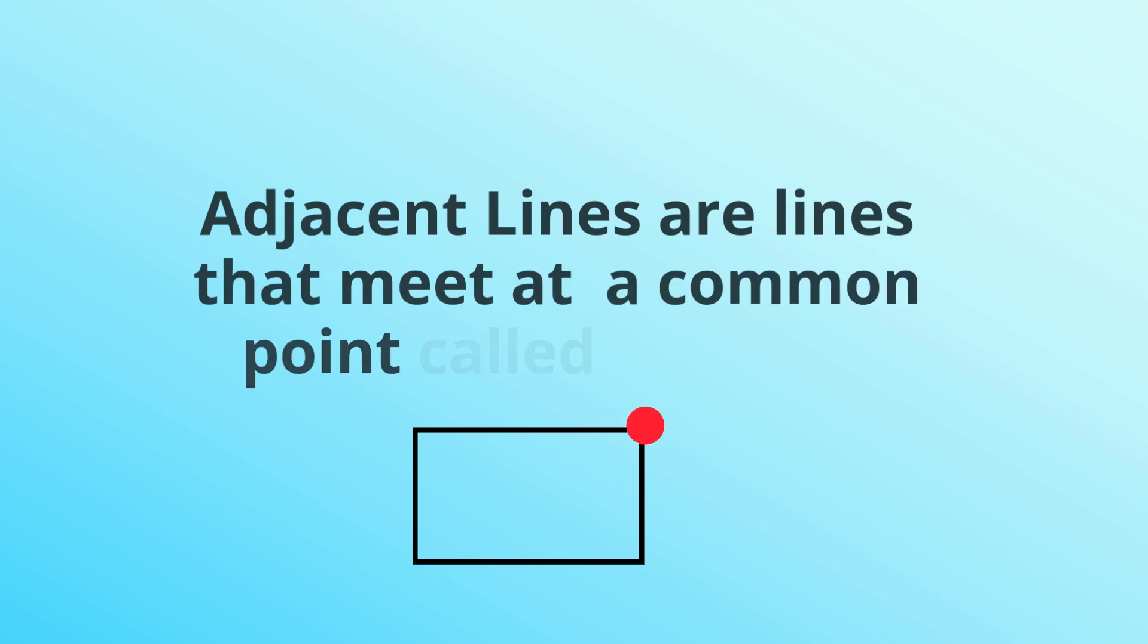Adjacent lines are lines that meet at a common point called a vertex. You can think of the vertex as the corner. So let's take a look at a couple examples.